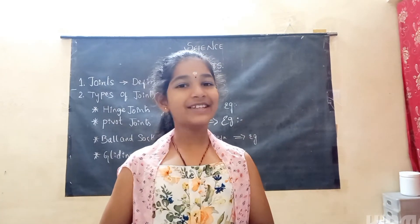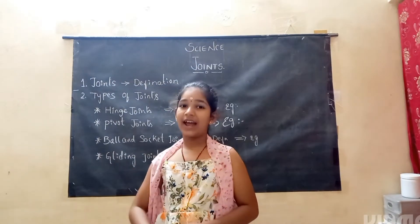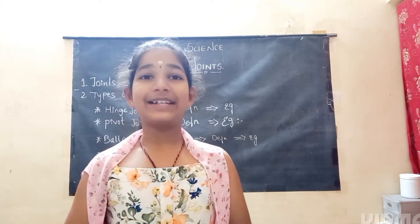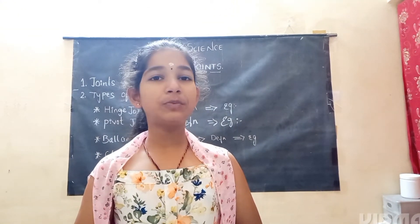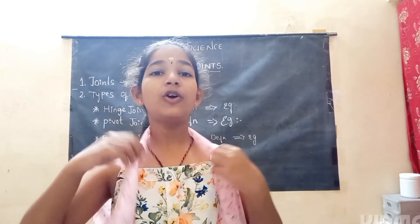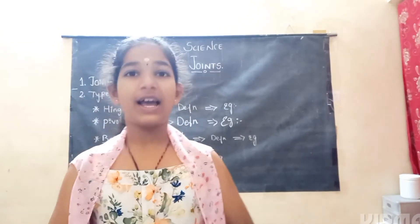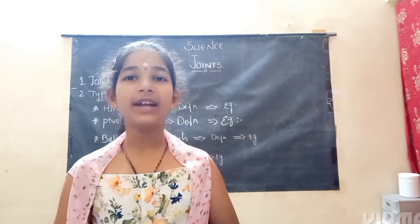Our next joint is gliding joint. Gliding joints allow a sliding movement when two pieces of bone come together. They are found in our backbone where the ribs meet our vertebra, and they allow movement in two directions. They are found in our wrists and our ankles.